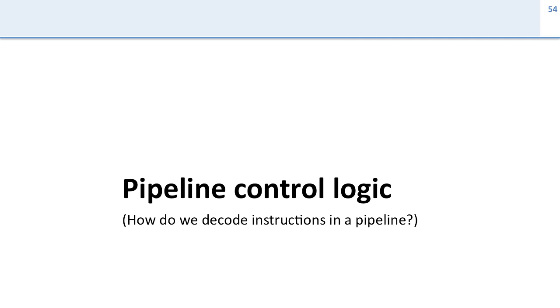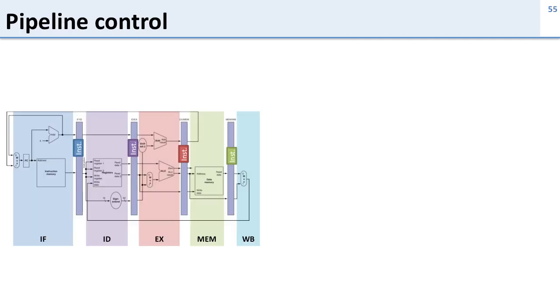So now let's talk about the pipeline control logic — that is, how do we decode and keep track of what instructions are supposed to do in the pipeline.